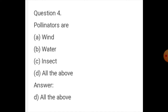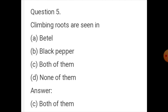Question number four: pollinators include wind, water, insects, and all of the above. The correct answer is all of the above. Question number five: climbing roots are seen in — betel, black pepper, none of them, or both of them? The correct answer is both of them.